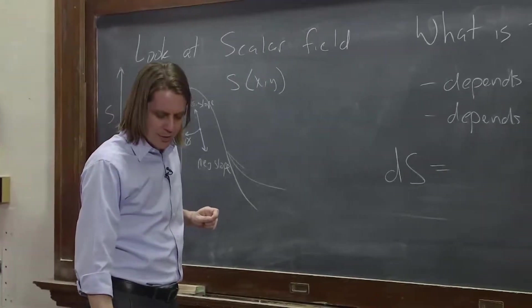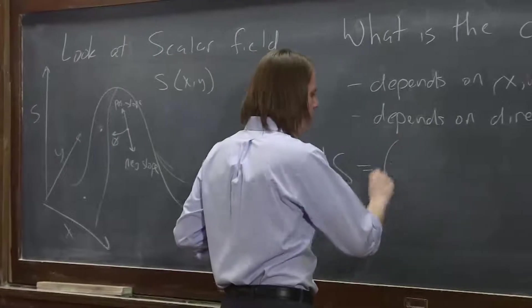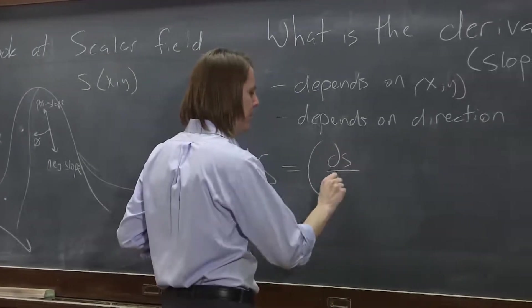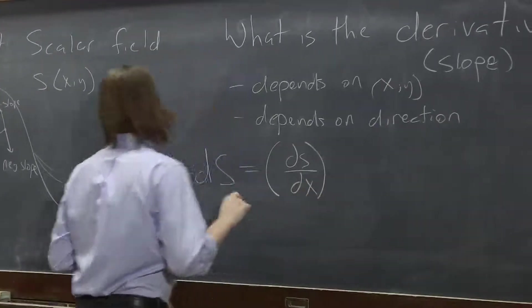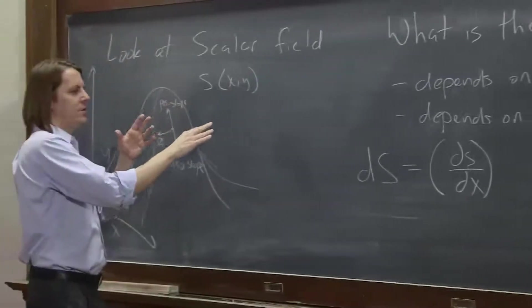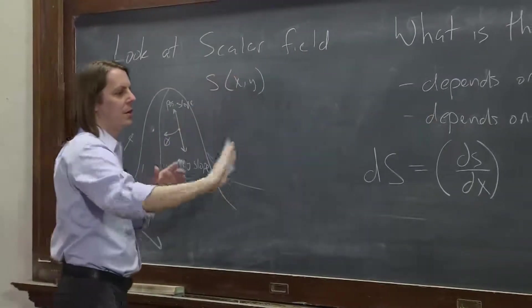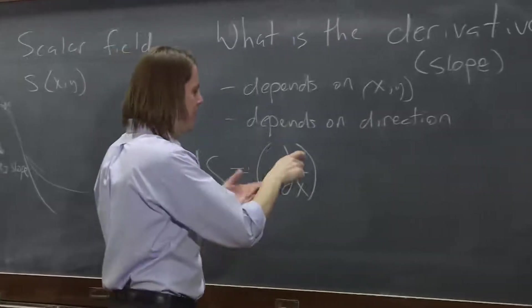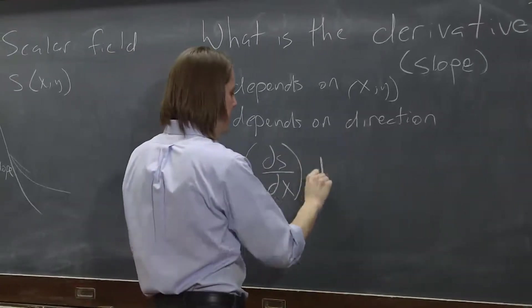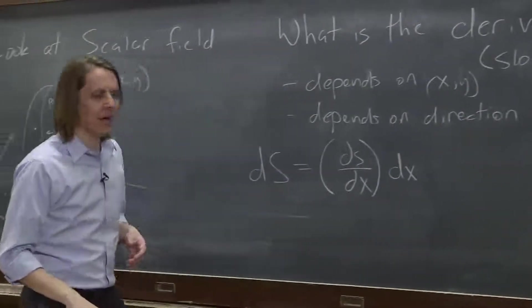What you do is you say it's equal to the partial derivative, which you remember, we talked about partial derivatives. You take the derivative of the function, just considering with respect to x, and you hold y and z if there's a z constant. It's like the partial dS/dx times the move you made in dx.